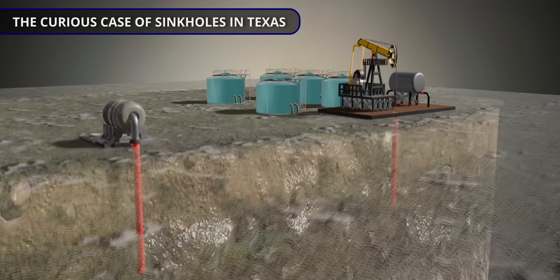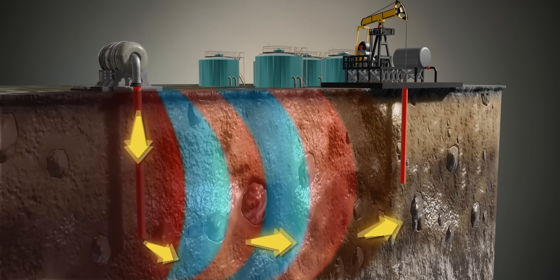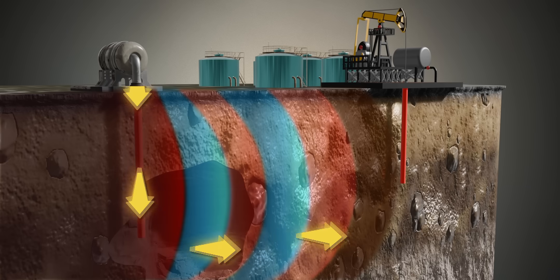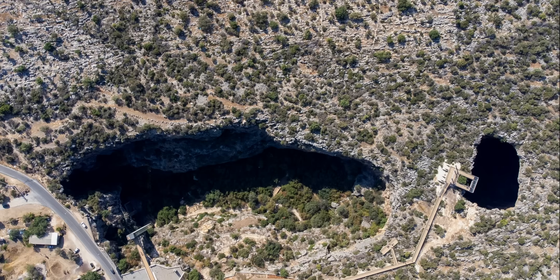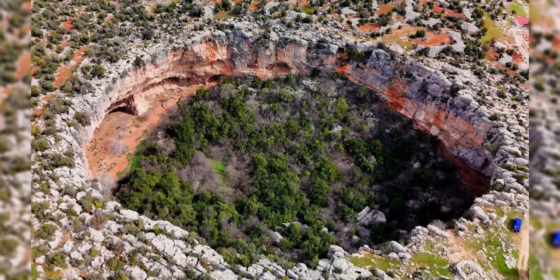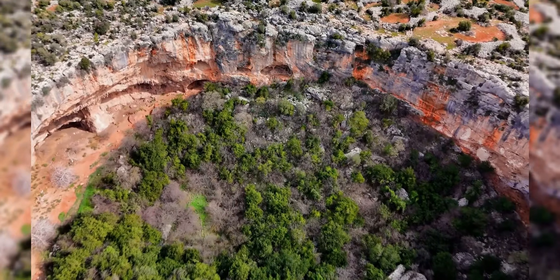Sinkholes in Texas are almost man-made. Texas does have significant karst regions, but a significant number of large sinkholes, especially in West Texas, were formed from decades of oil and gas extraction. Injecting water to force out petroleum can dissolve underground salt beds, creating massive cavities that eventually collapse. Some sinkholes have become historical tourist attractions — the Cennet and Cehennem sinkholes in Turkey are excellent examples, formed by a subterranean river chemically eroding limestone rock in a karst landscape, which eventually caused the ceilings of large underground caverns to collapse.